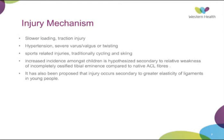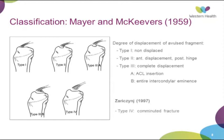The classification system is Myers and McKeever. They described this classification in 1959 and broke it into types 1, 2, and 3, in relation to the displacement of the avulsed fragment. Type 1 is completely non-displaced. Type 2 has anterior displacement but the posterior hinge is still intact. Type 3 is further subclassified — type 3A is a fracture at the ACL insertion, whereas type 3B encompasses the entire intercondylar eminence.